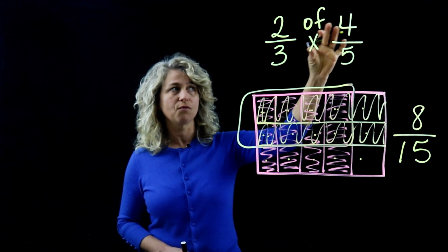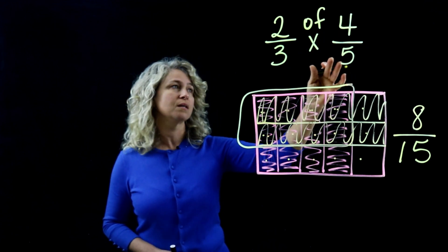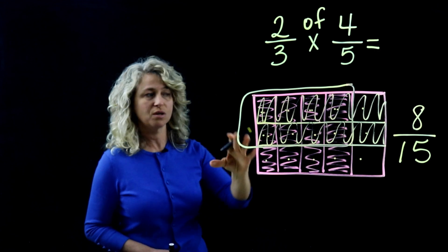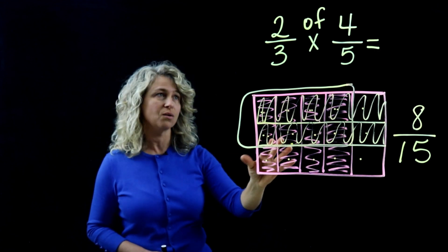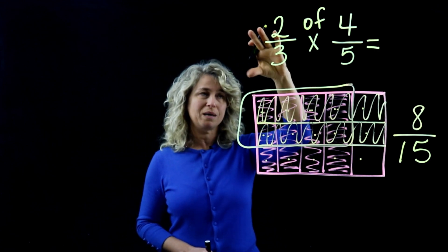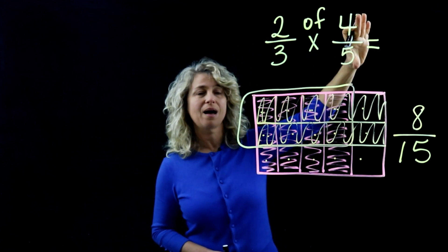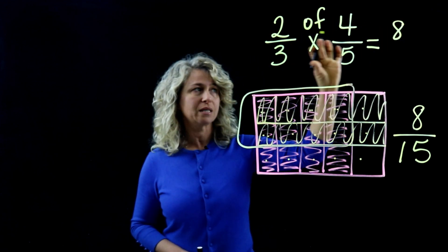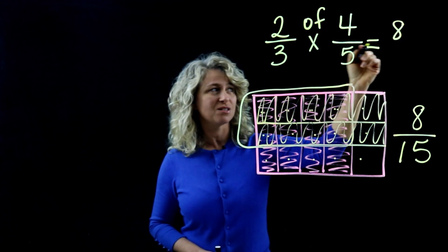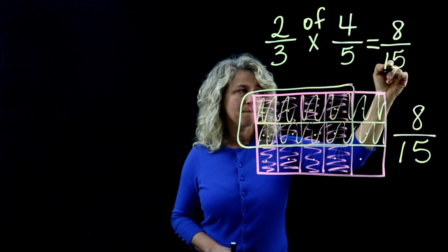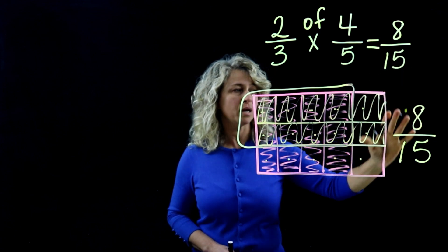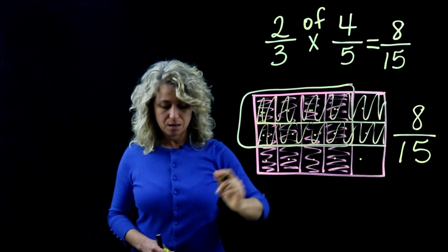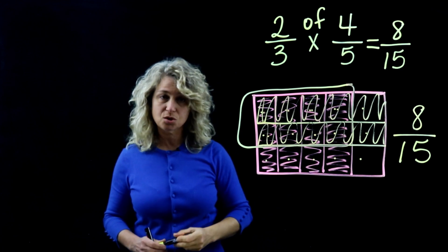That model correctly shows two-thirds of four-fifths. Of course, the easy way — without drawing a model — is to just multiply straight across: two times four is eight, and three times five is fifteen. But it's useful to see how the model works too.